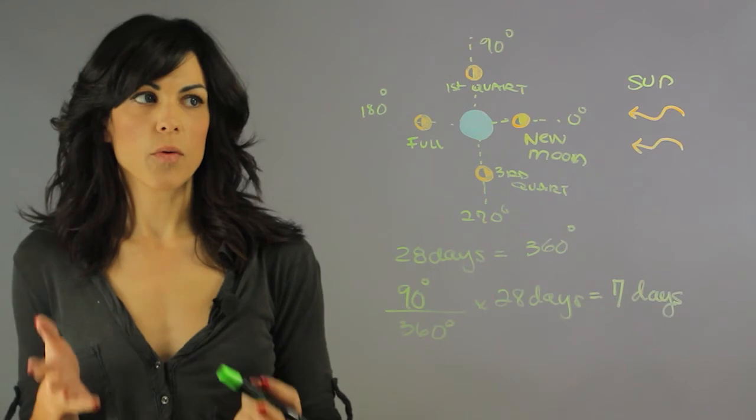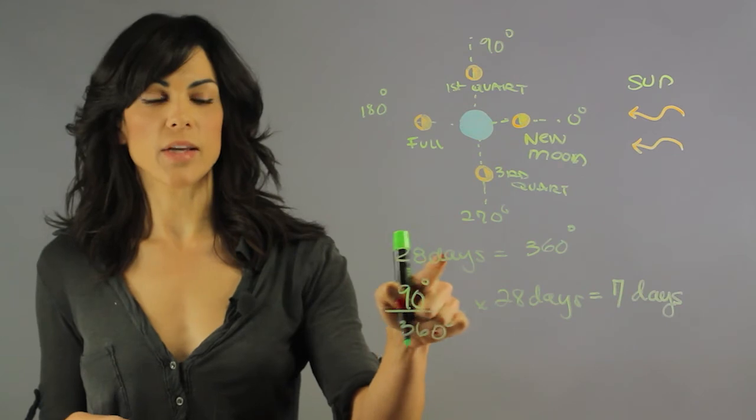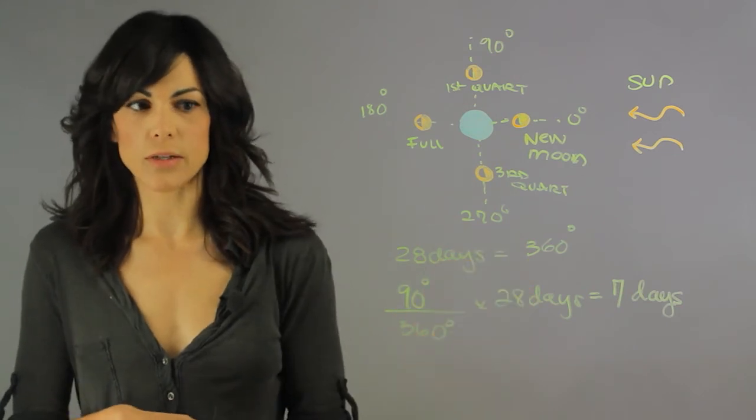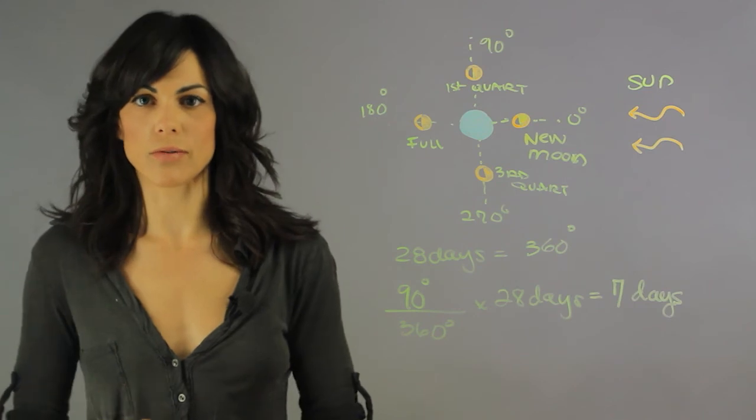So if you ever want to find out how long it takes something to go in a complete circle, figure out the number of days that it takes to do 360 degrees. And then you can use your conversion factor to figure out how long the intervals are.